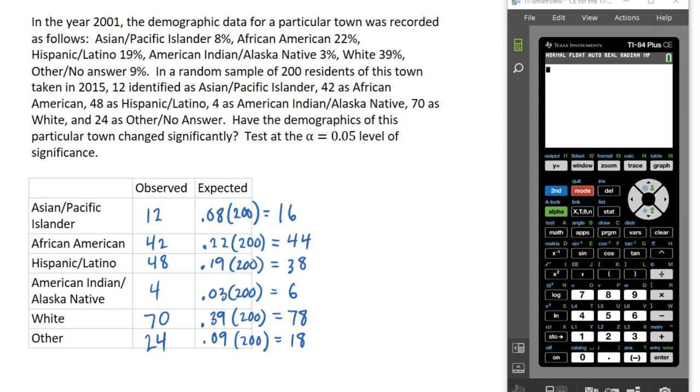What we're trying to do in this test is determine which is more likely. Are these differences just due to random chance because we're using a random sample, or are these differences more significant to the point where we might adjust our probability distribution and update it so it's more accurate?